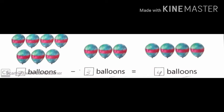Now see the second question. Seven balloons minus three balloons. From seven balloons, we will take away three balloons — one, two, three. So what is left with us? Four balloons.